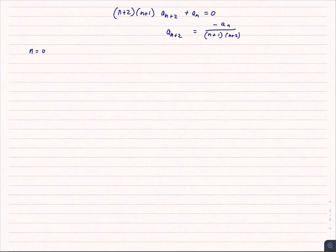If n is equal to 0, that means a_2 is equal to negative a_0 over 1 times 2. So again, all I'm doing is, and actually because I know where this is going, I'm going to reorder those. And then if I let n equal 1, I find that a_3 is equal to negative a_1 over 3 times 2.